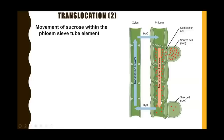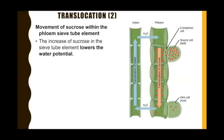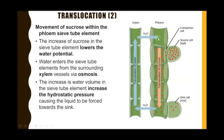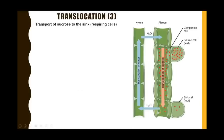Now we need to think about how sucrose gets transported along the sieve tube elements — this is where it's linked to pressure changes. With lots of dissolved sucrose in the sieve tube elements, the water potential in this section of the phloem is lowered. The xylem lies directly next to the phloem, and as a result water moves into the sieve tube elements by osmosis. This creates a very high volume and a high hydrostatic pressure, which forces the liquid towards an area of lower hydrostatic pressure near the sink cells.